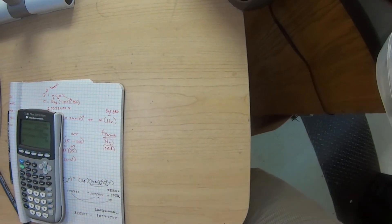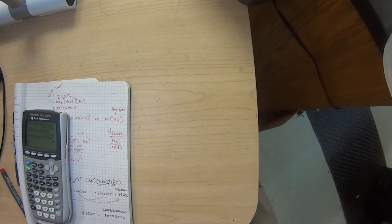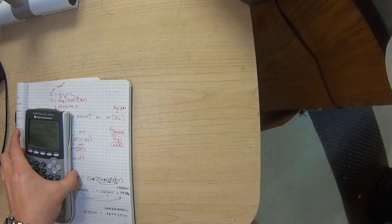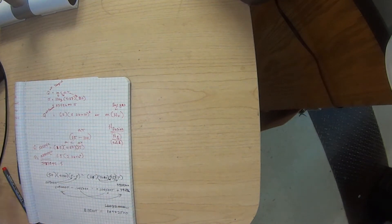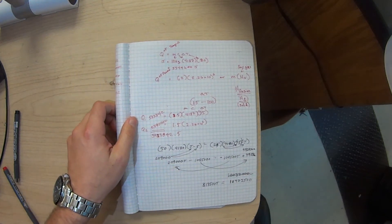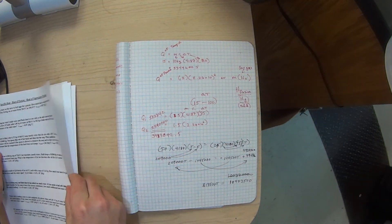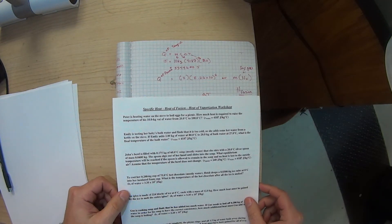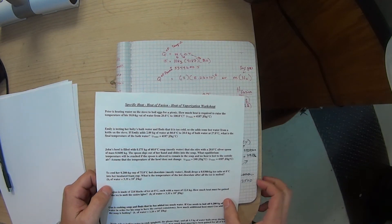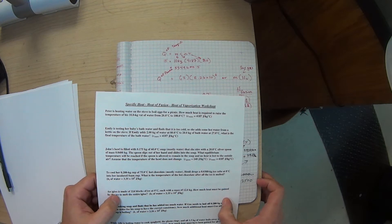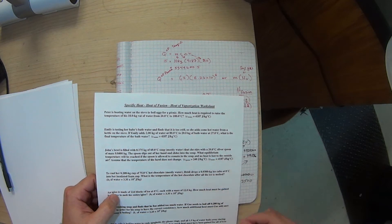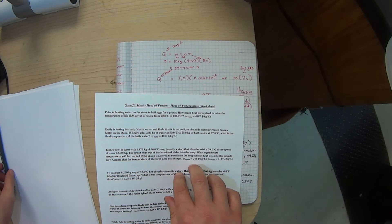Alright, today this will be the review for the test. We'll start with this worksheet right here. Hopefully you have this one. If you don't have it, get on the website, it should be on there and you can print it off. We're going to focus on a couple of problems here.